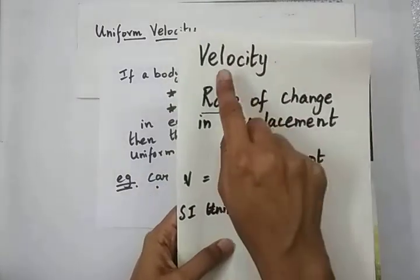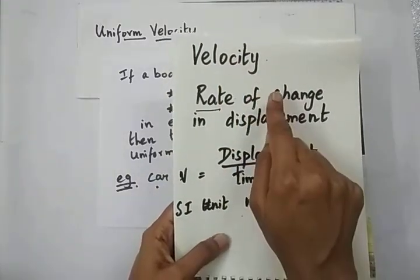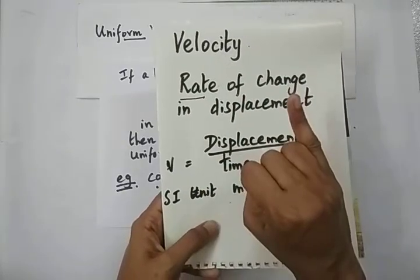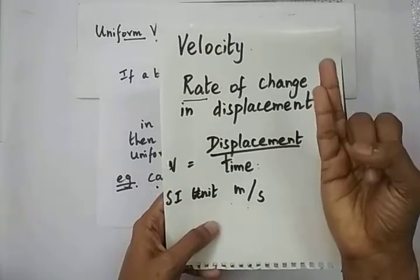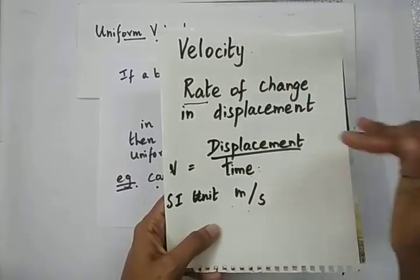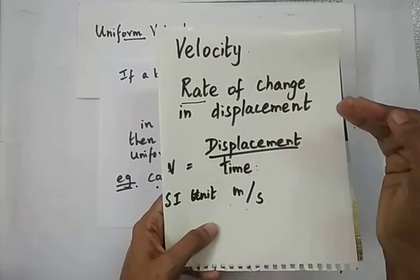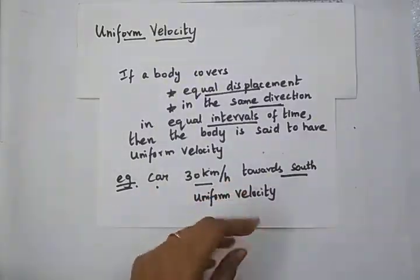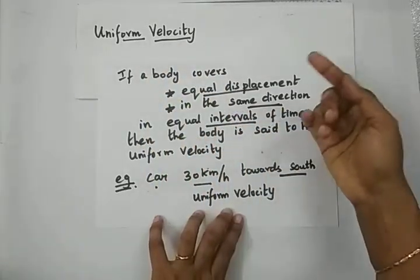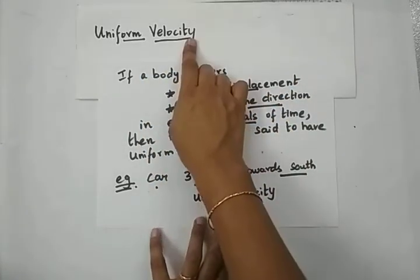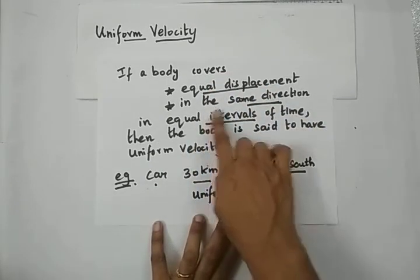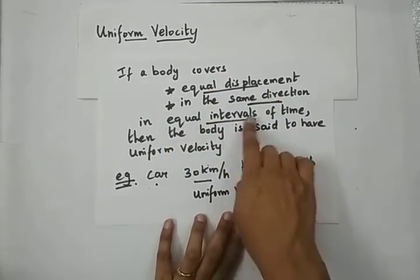Velocity is a vector quantity — it is the rate of change in displacement, which has both magnitude and direction specified. So velocity is nothing but speed specified with direction. Now we will learn what is uniform velocity: when will you say that a body has uniform velocity? If a body covers equal displacement in the same direction in equal intervals of time, the body is said to have uniform velocity.